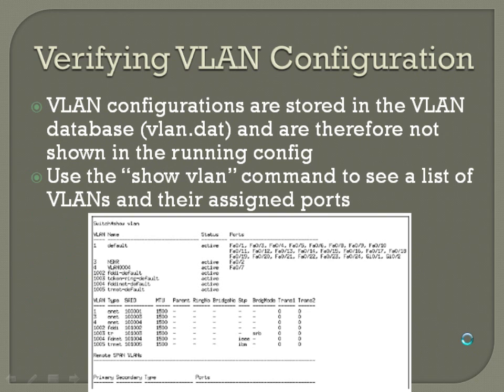For verifying your VLAN configurations: VLAN configurations are stored in the VLAN database, or the VLAN.dat on a switch, and are therefore not shown in the running config. When we talk about transparent mode later, that's a slightly different situation, but for the most part VLAN configurations are not going to be visible in the running configuration of the switch. You're going to want to use the 'show VLAN' command to see a list of VLANs and their assigned ports.